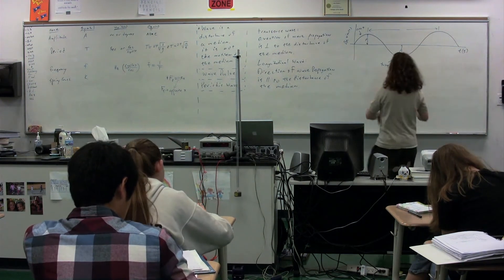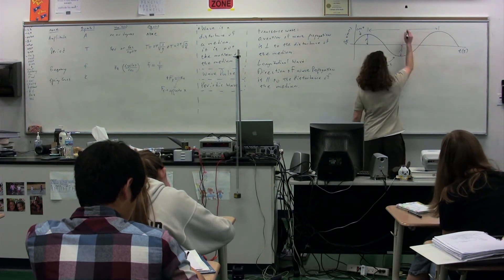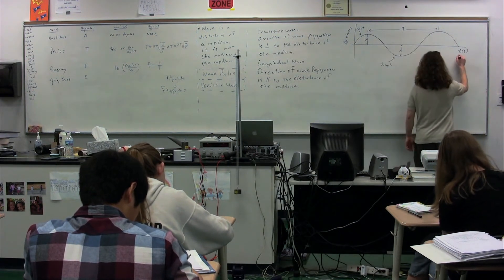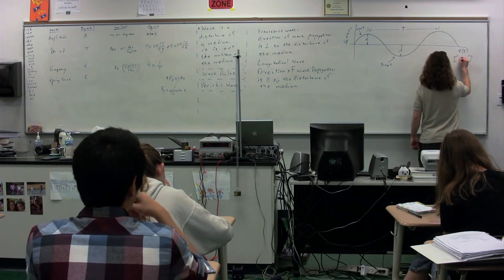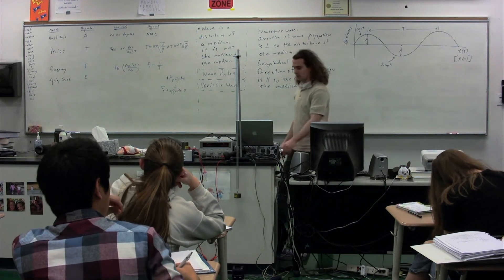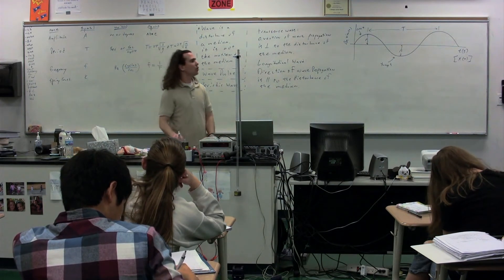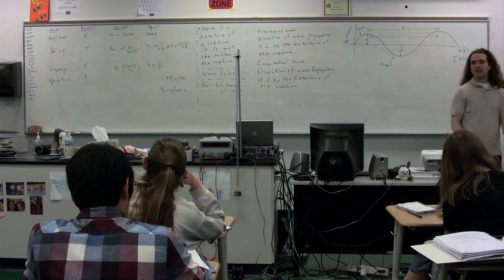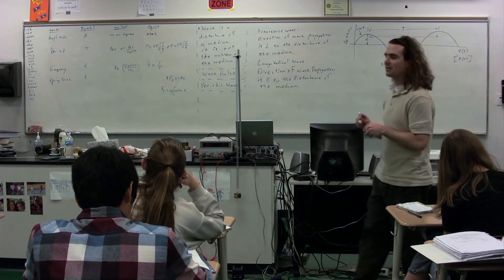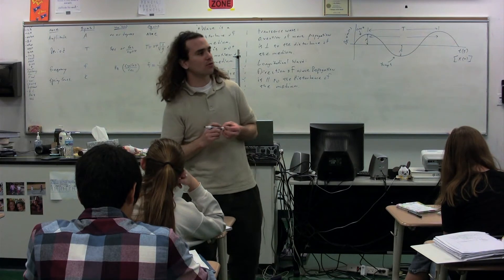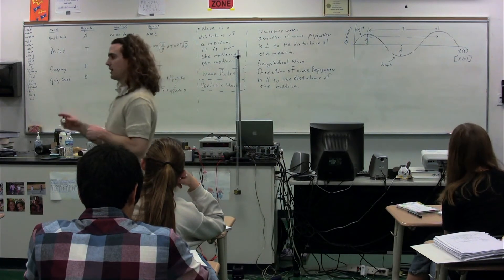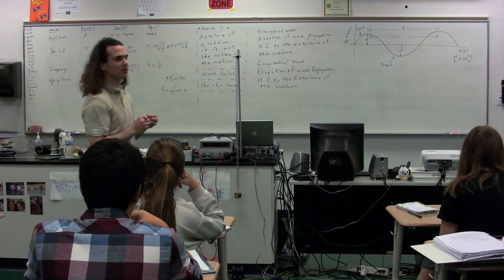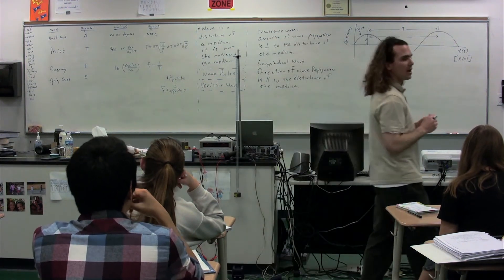The distance between two crests is called the period — the time for one full cycle. Now if instead of having time on the x-axis, we had position on the x-axis in meters, what would this have been? It's not the frequency — that's just the inverse of the period. This is the distance traveled during one full cycle, which is the wavelength.